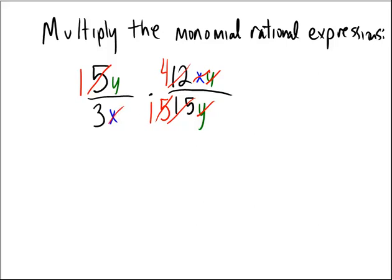So when we come to our final answer here now, on the top we have a 1 times a y times a 4. So that would come out to become a 4y. And in the bottom we have a 3 and a 1 and nothing else. So 3 times 1 is just 3. And so the final answer to this problem would be 4y over 3.